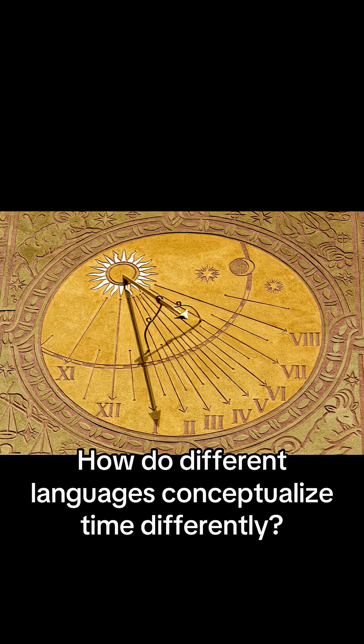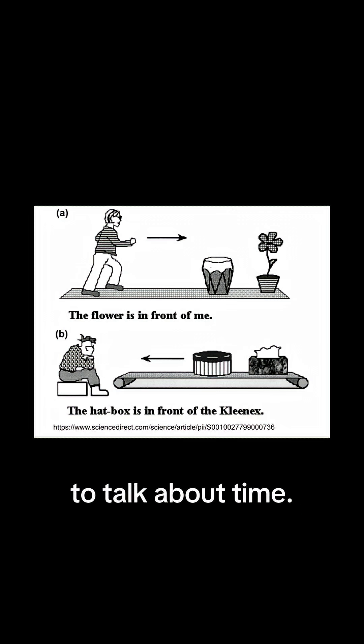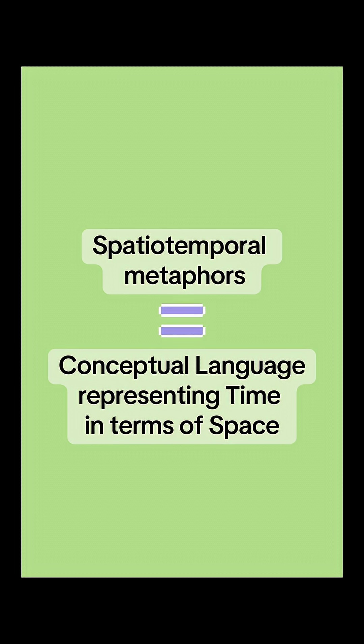How do different languages conceptualize time differently? Languages enlist a variety of spatiotemporal metaphors to talk about time. Spatiotemporal metaphors are basically speech that uses physical language to represent abstract ideas like time.